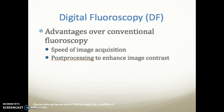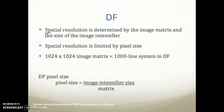Digital fluoroscopy has some advantages over conventional fluoroscopy. One is the speed of image acquisition and post-processing to enhance image contrast. With digital fluoroscopy, spatial resolution is determined by the image matrix and the size of the image intensifier. The spatial resolution is limited by the pixel size. A 1024 by 1024 image matrix is considered to be a thousand-line system in DF. When calculating pixel size, you take the image intensifier size — 6, 9, 12, or whatever the size — and divide it by your matrix.